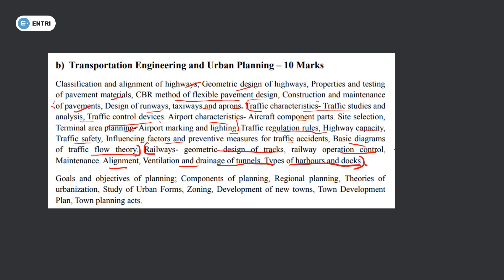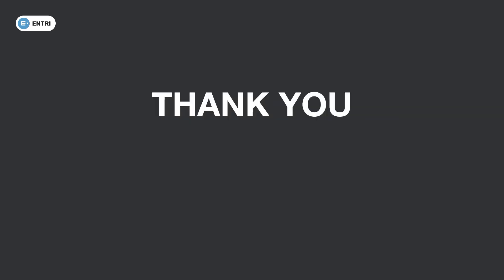Urban planning: goals and objectives of planning, components of planning, regional planning, theories of urbanization, urban forms, new town development, town planning act. Transportation engineering and urban planning — this is the same syllabus as that of the AEE exam. PSE and AEE exams share the same syllabus structure.